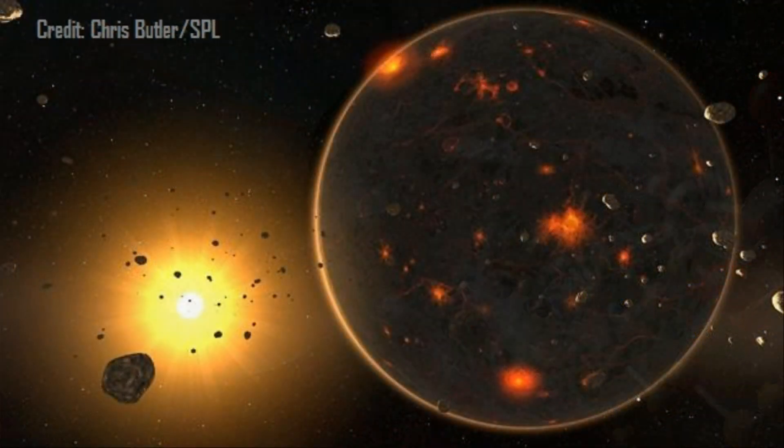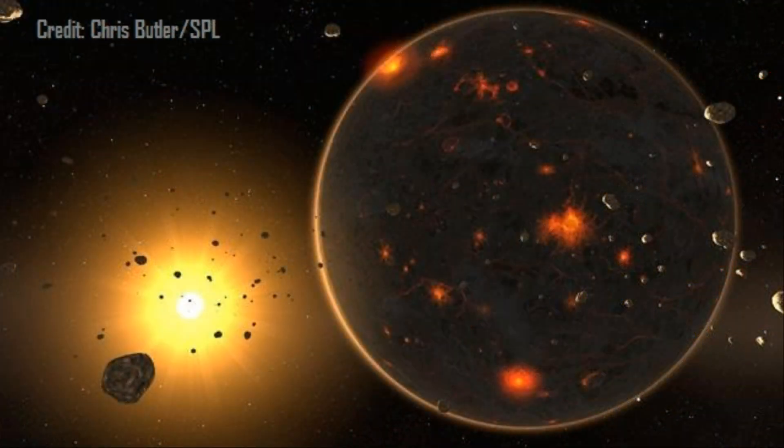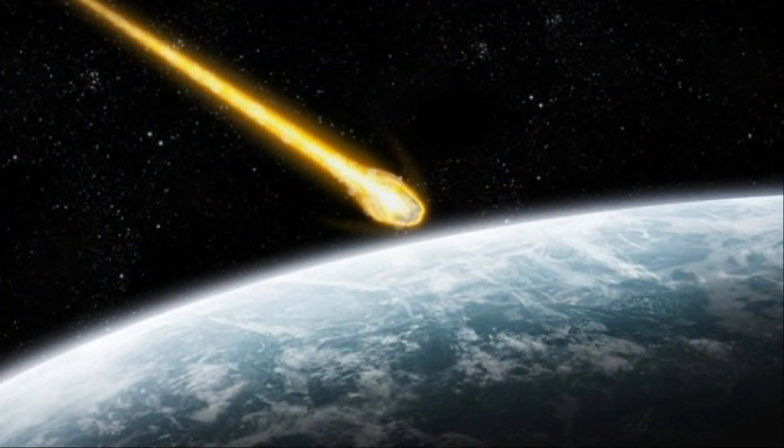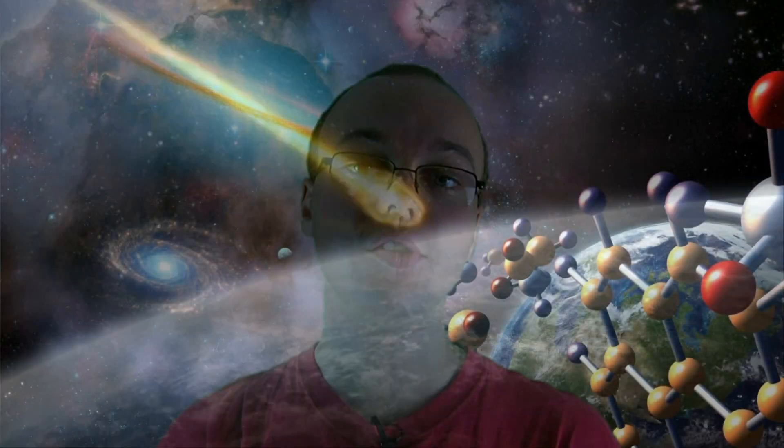But all of this changed 4 billion years ago, when gravitational interactions between the gas giants sent a cataclysmic wave of asteroids and comets hurtling into the inner solar system, an era we call the late heavy bombardment. Many of these would have impacted the early Earth, seeding it with copious quantities of organic material. So having identified how the building blocks of life likely came to the Earth, what we need to look at now is to try and find a mechanism to assemble them into complex structures capable of self-replication.